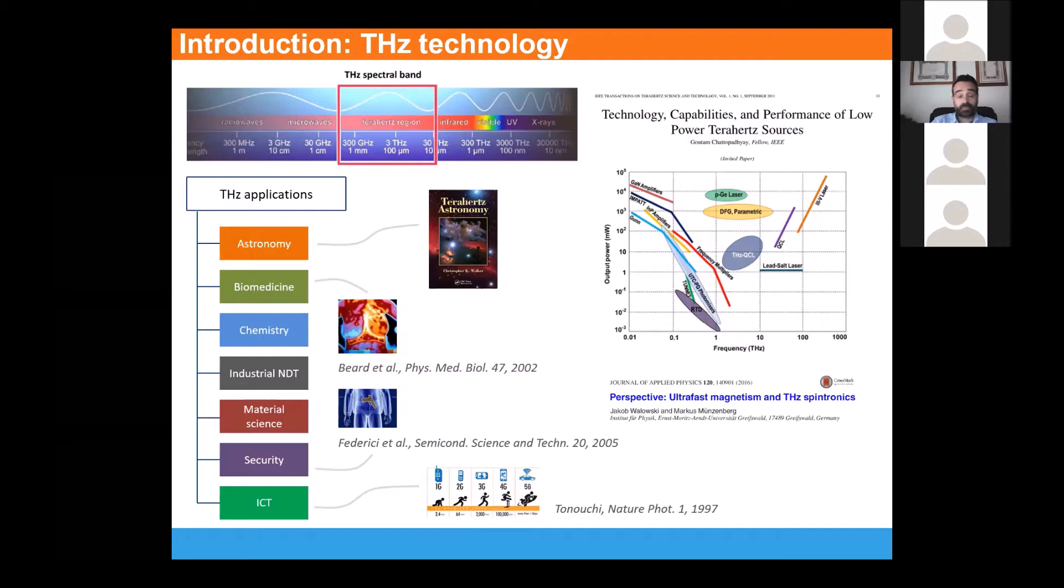Second, as compared to microwaves, terahertz emission enables to achieve better quality for imaging. And last, another important property of terahertz emission is its harmlessness with respect to biological entities. For instance, with respect to x-rays, they are safe for humans, animals, and plants.